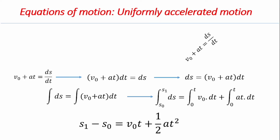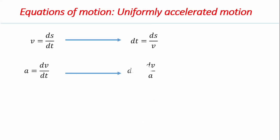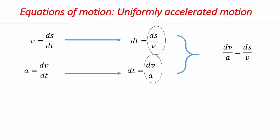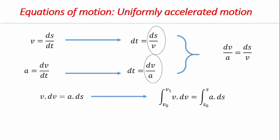Finally, taking both fundamental equations v = ds/dt and a = dv/dt, and making dt the subject of each, both sides can be equated since they both equal dt. This gives dv/a = ds/v. Cross multiplying yields v·dv = a·ds. Integrating with limits from v0 to v1 for velocity and from x0 to x for position, we arrive at the third equation of motion: v1² = v0² + 2a(x − x0).